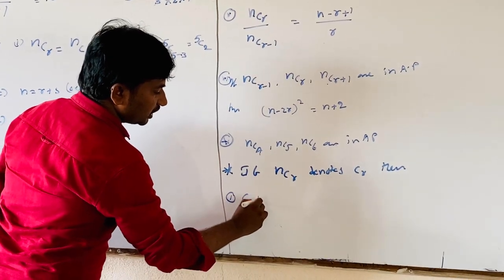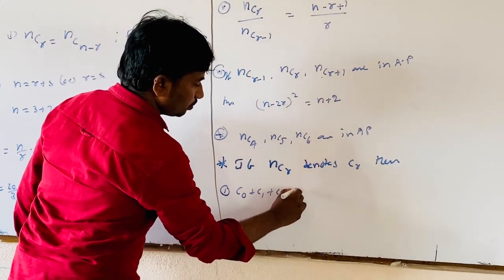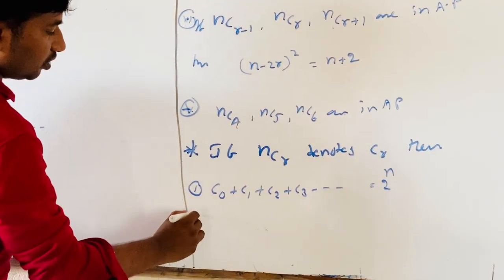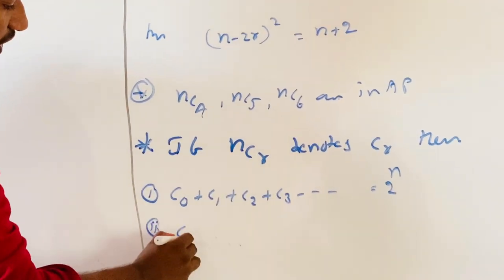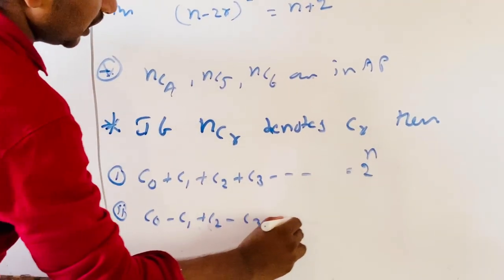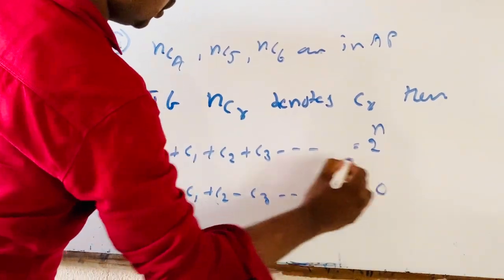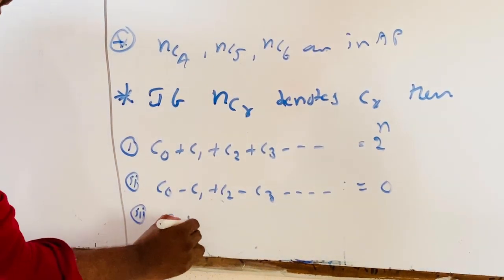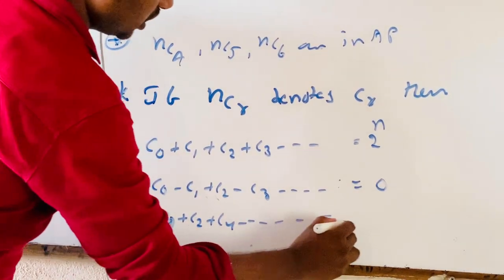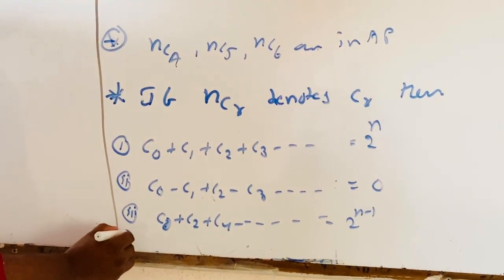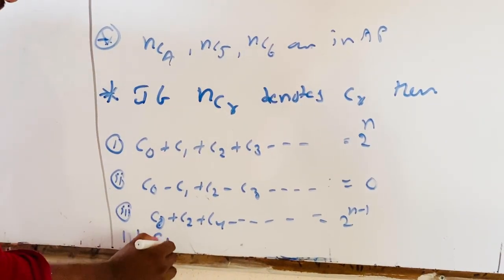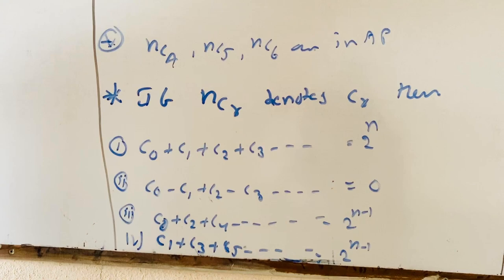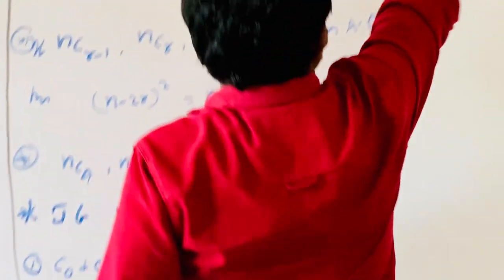If NCR is denoted as Cr, the four useful conditions are: First, C0 + C1 + C2 + C3 + ··· = 2^N. Second, C0 − C1 + C2 − C3 + ··· = 0. Third, C0 + C2 + C4 + ··· = 2^(N−1). Fourth, C1 + C3 + C5 + ··· = 2^(N−1). We will now prove these using formulas.